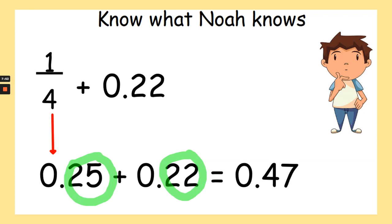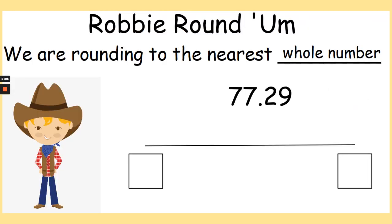Now we're going on to Robbie Roundham. So we are rounding to the nearest whole number and our number is 77.29 and we want to round this to the nearest whole number. So pause the video now and write your answer.